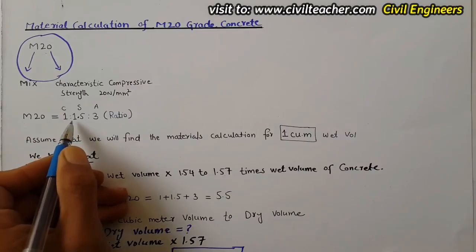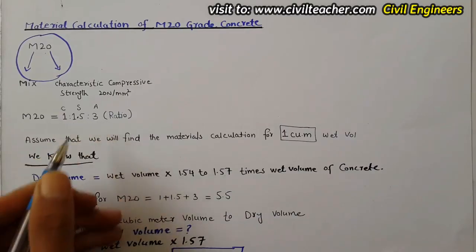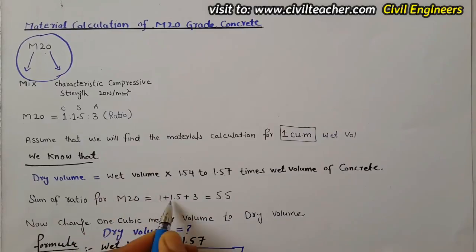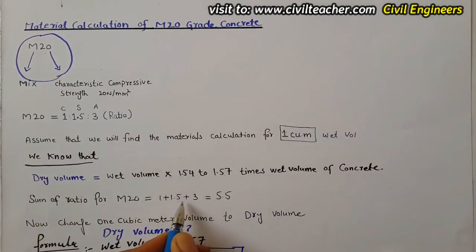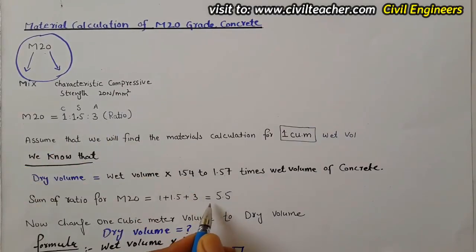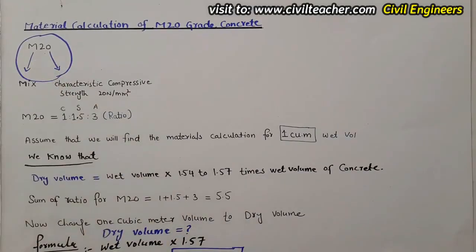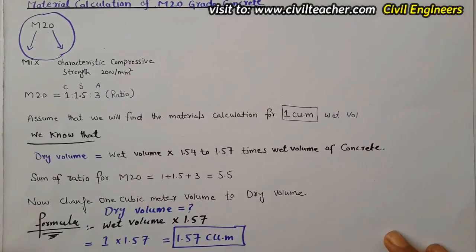Now find the sum of ratio for M20. The ratio is 1:1.5:3, so the sum of ratio is 1 plus 1.5 plus 3, which equals 5.5. This is the sum of ratio for M20 grade of concrete.